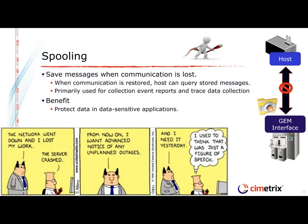GEM also has a feature called spooling, where messages normally sent from the equipment to the host can be saved automatically, so that if you lose communication, the GEM interface can save those messages. When you reconnect, the host system can ask for those messages again so you're not losing data.